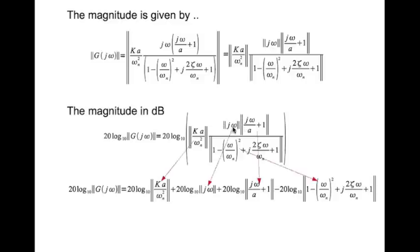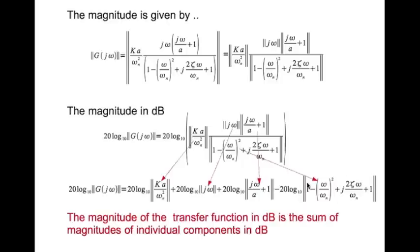This magnitude of j*omega ends up here, the constant ends up here, the Bode gain ends up here, the zero at A ends up here, and the complex pole ends up here. So the magnitude of the transfer function in decibels is the sum of the magnitudes of individual components in decibels.